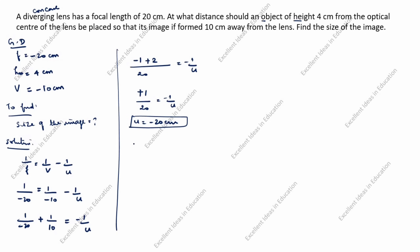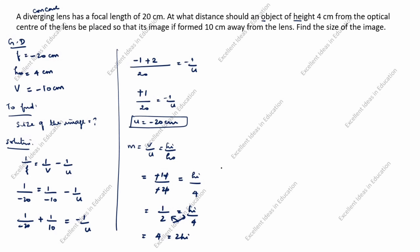Next we find magnification. The magnification formula is m = v/u = hi/ho. Substituting: (-10)/(-20) = hi/4. The negatives cancel, giving 1/2 = hi/4. Cross-multiplying: 2·hi = 4, so hi = 4/2 = 2 centimeters.